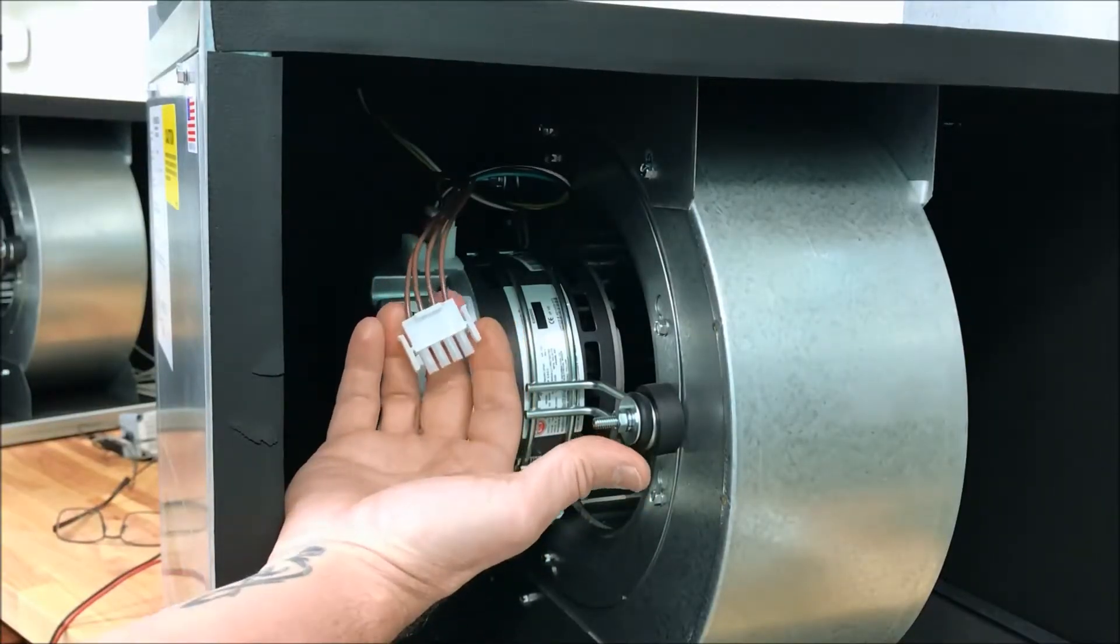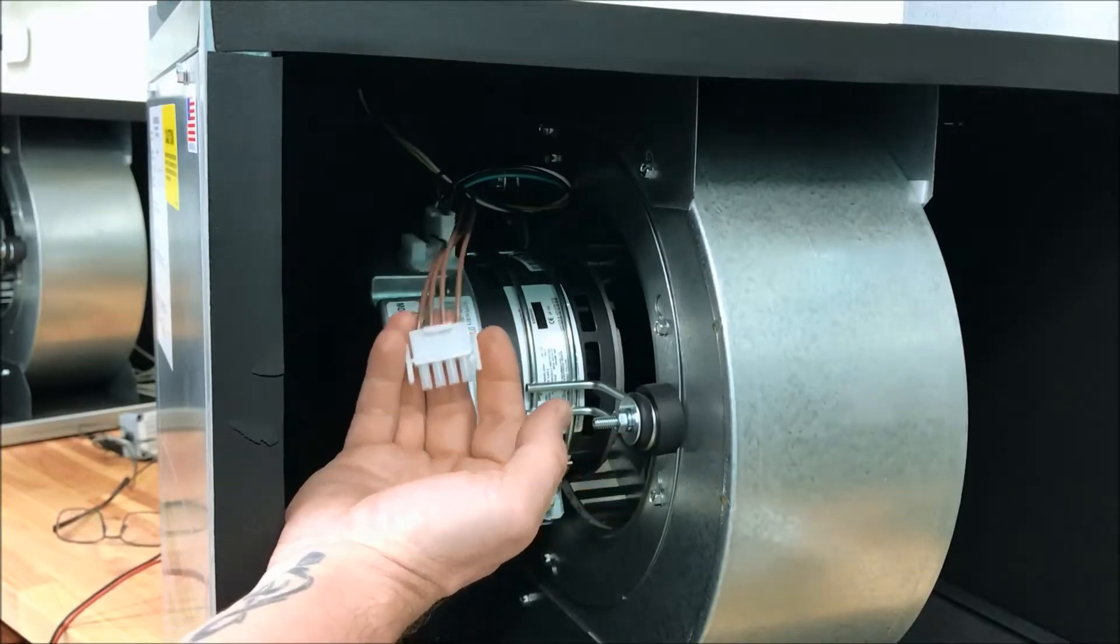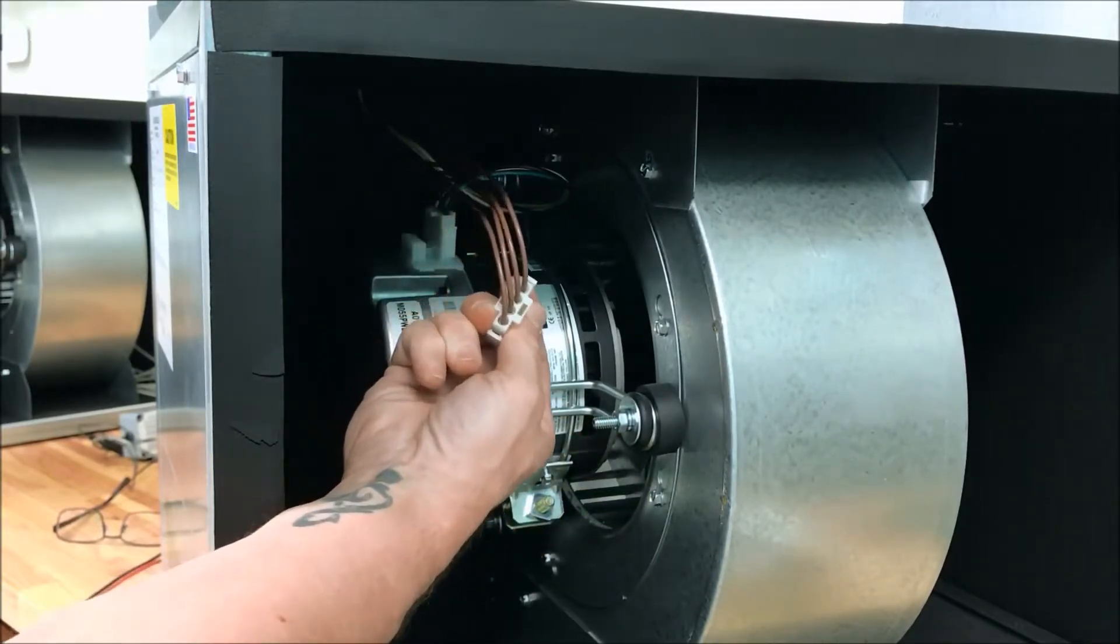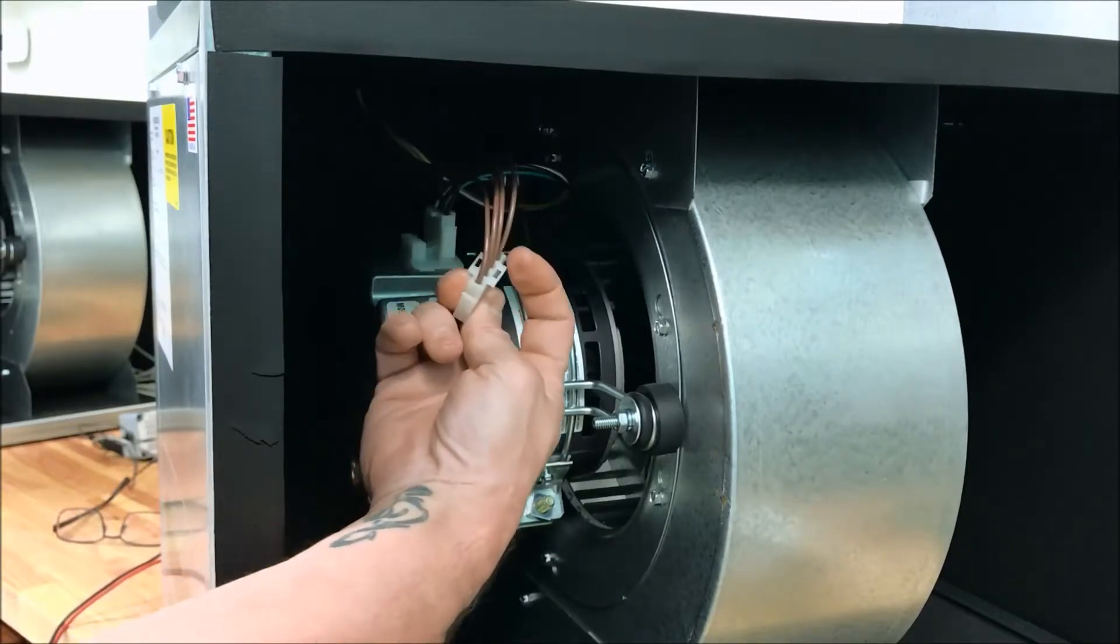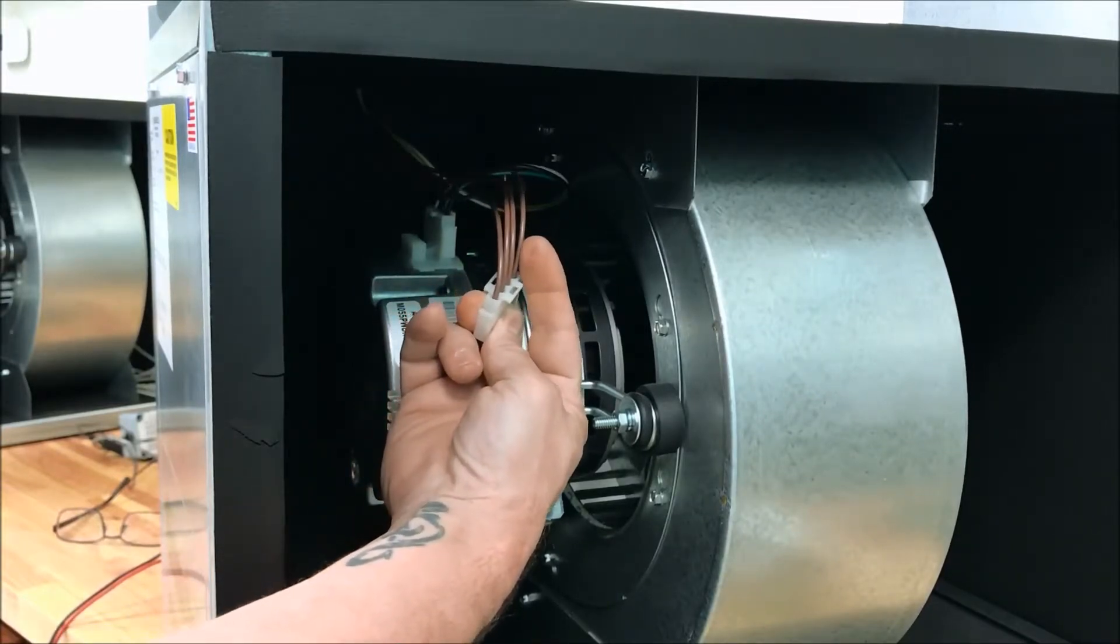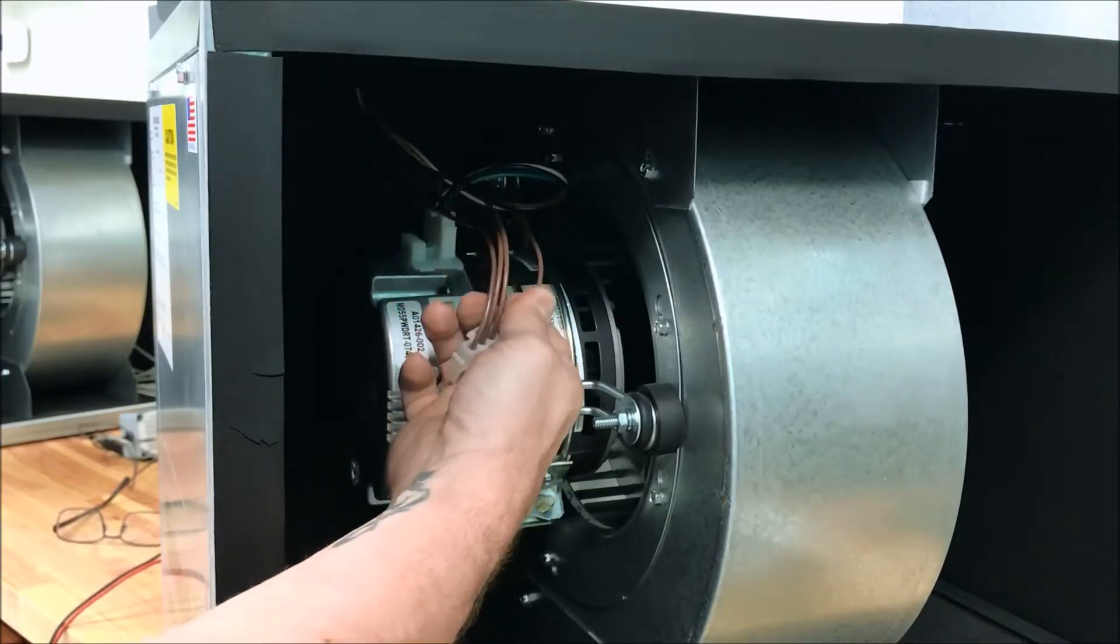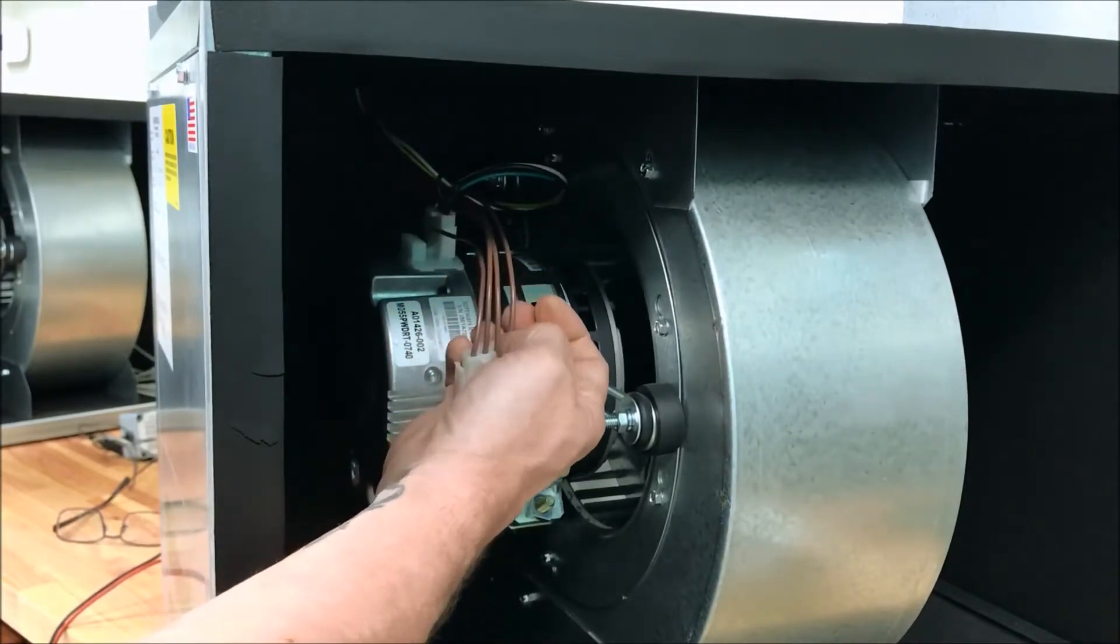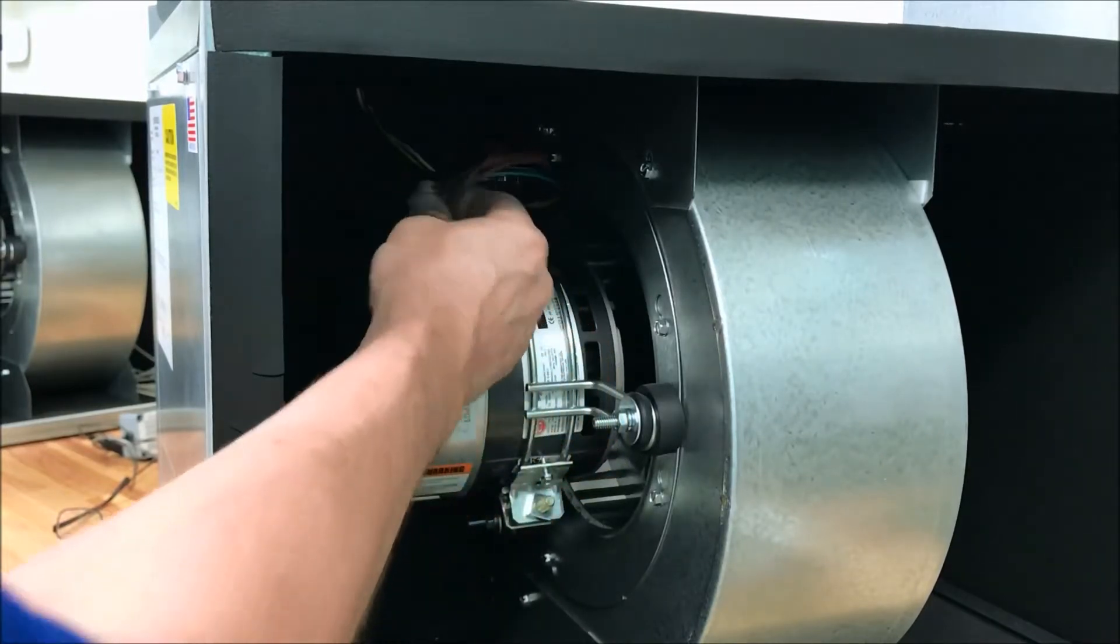To force the motor into a test spin manually, unplug the wiring harness with the brown wires. Look at this end and there's numbers 1, 2, 3, 4, labeling the wires. Find wires number 1 and number 3.